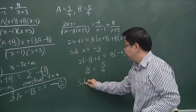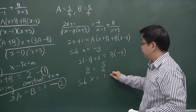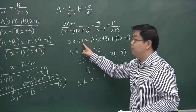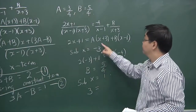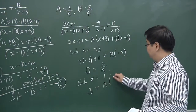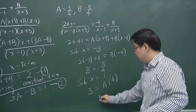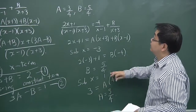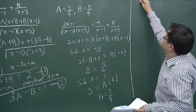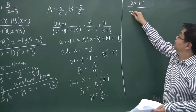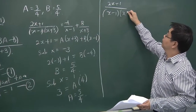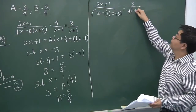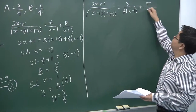Substituting x equals 1 makes the B term vanish. We have 2 times 1 plus 1, so 3 equals A multiplied by 4, giving A equals 3 over 4. After obtaining both values, we present our final answer as before: A is 3 over 4 and B is 5 over 4.